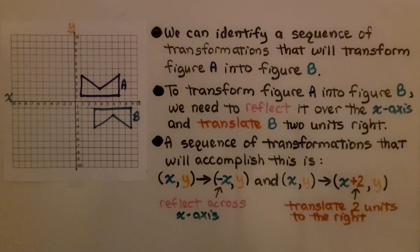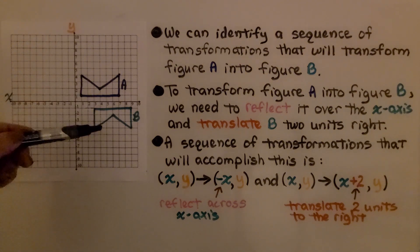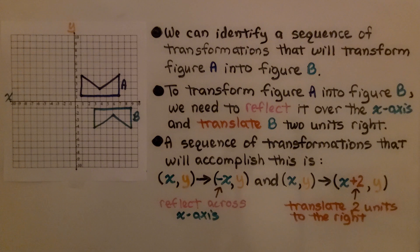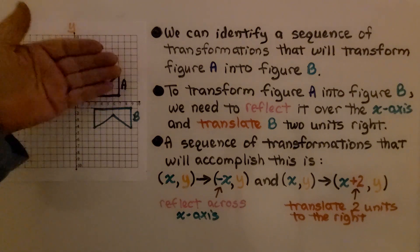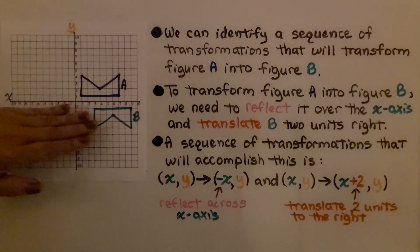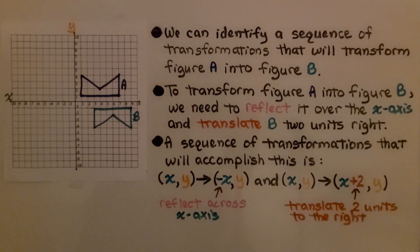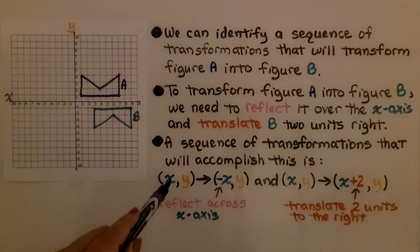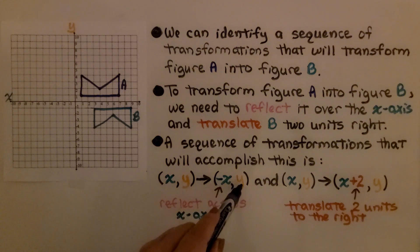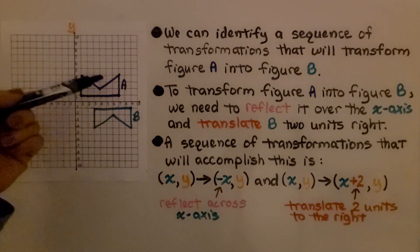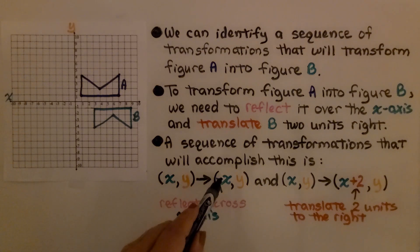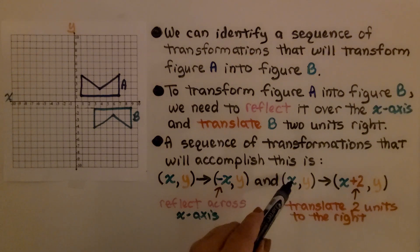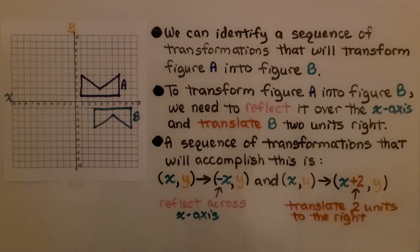We can identify a sequence of transformations that will transform figure A into figure B. To transform figure A into figure B, we need to reflect it over the x-axis and translate 2 units right. The x and y coordinates will map to negative x and y. When we reflect across the x-axis, we multiply the x coordinates by negative 1 to get negative x, y. Once reflected, we translate two units to the right: x plus 2, y.